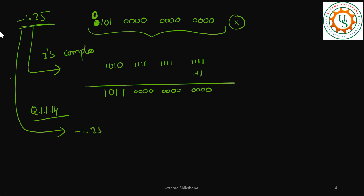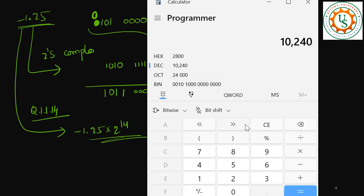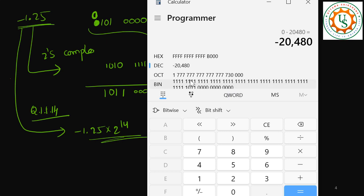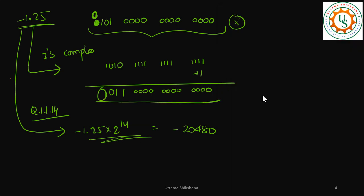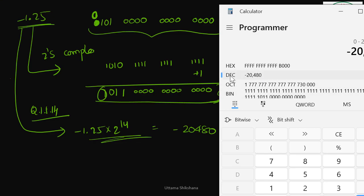Let's verify: minus 1.25 multiplied by 2 to the power of 14 gives minus 20480. I'll go to the calculator, type minus 20480. It shows the result in 64-bit format, but we take only the last 16 bits. You can see the last bits are 1 0 1 1 — which confirms this is a negative number and the magnitude is stored in 2's complement. The decimal value shown is minus 2480 — wait, minus 20480 — confirming our result.